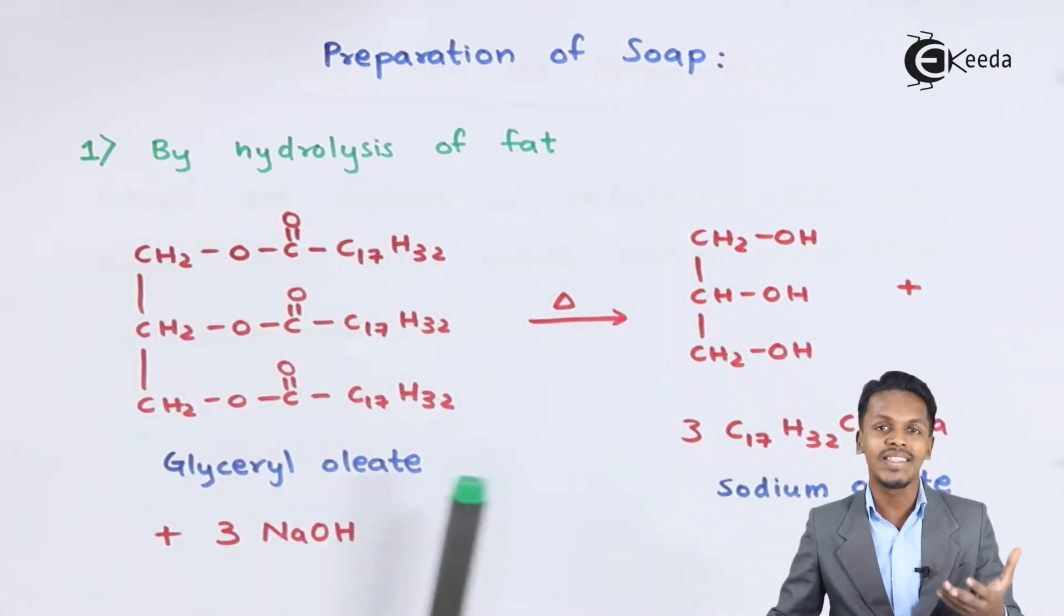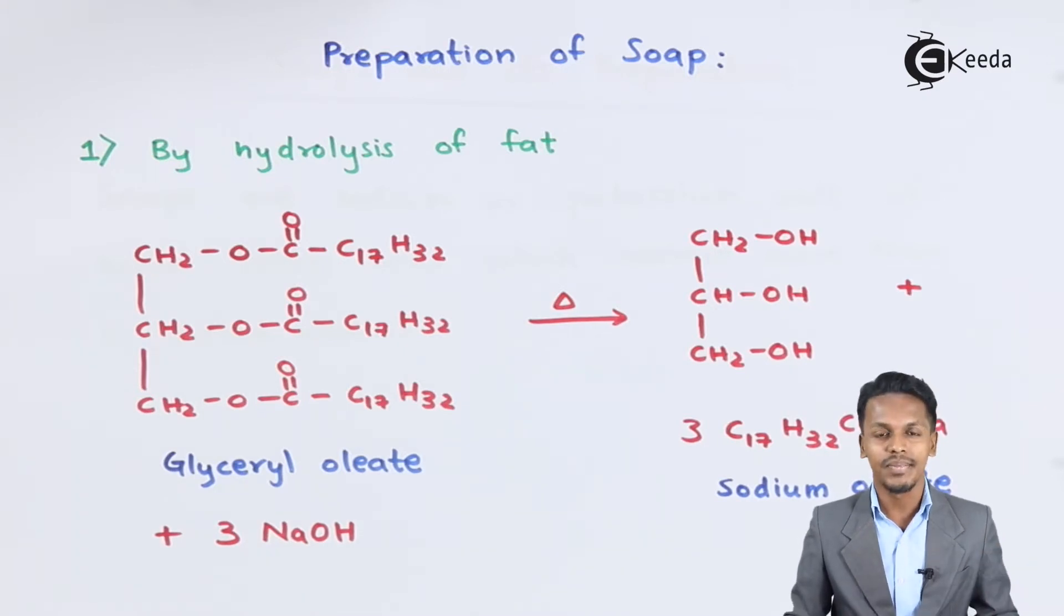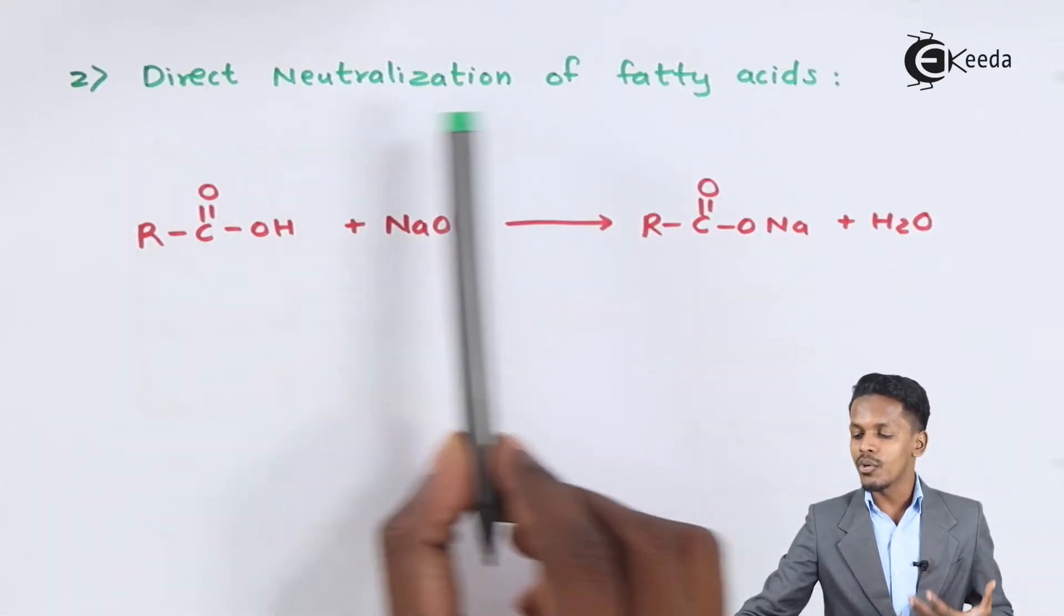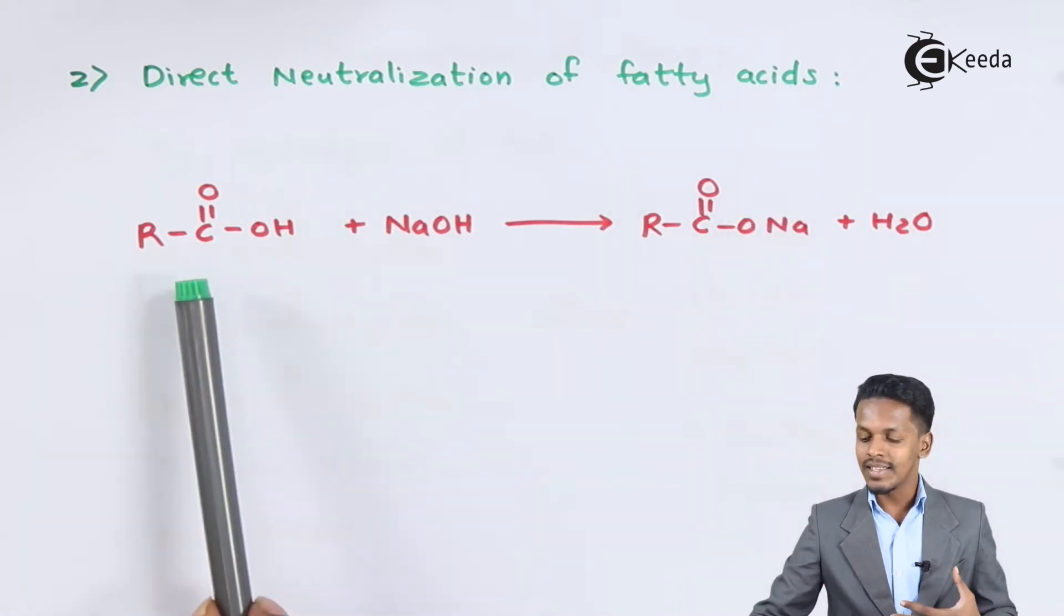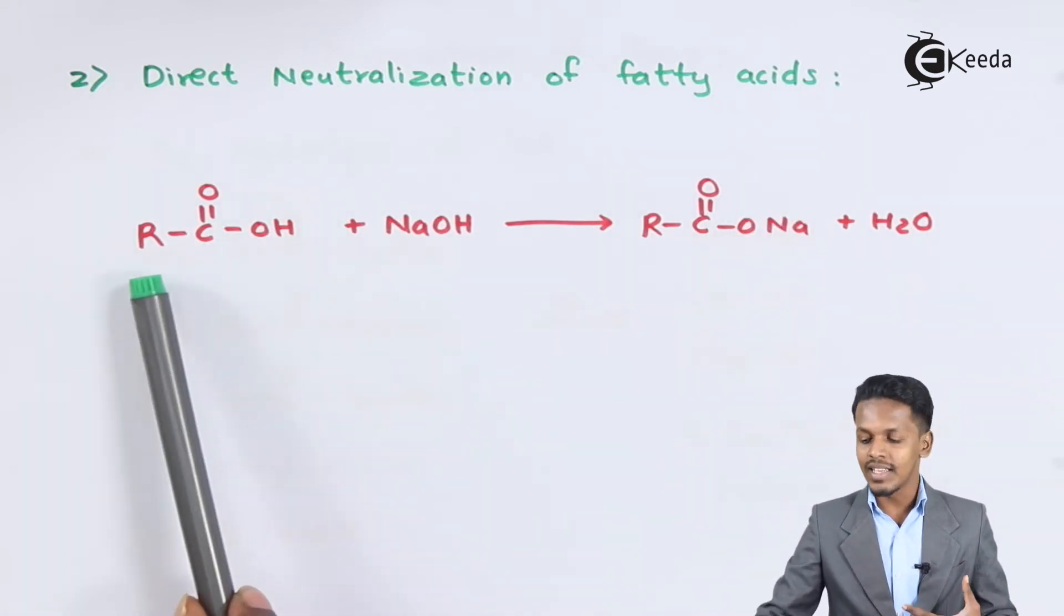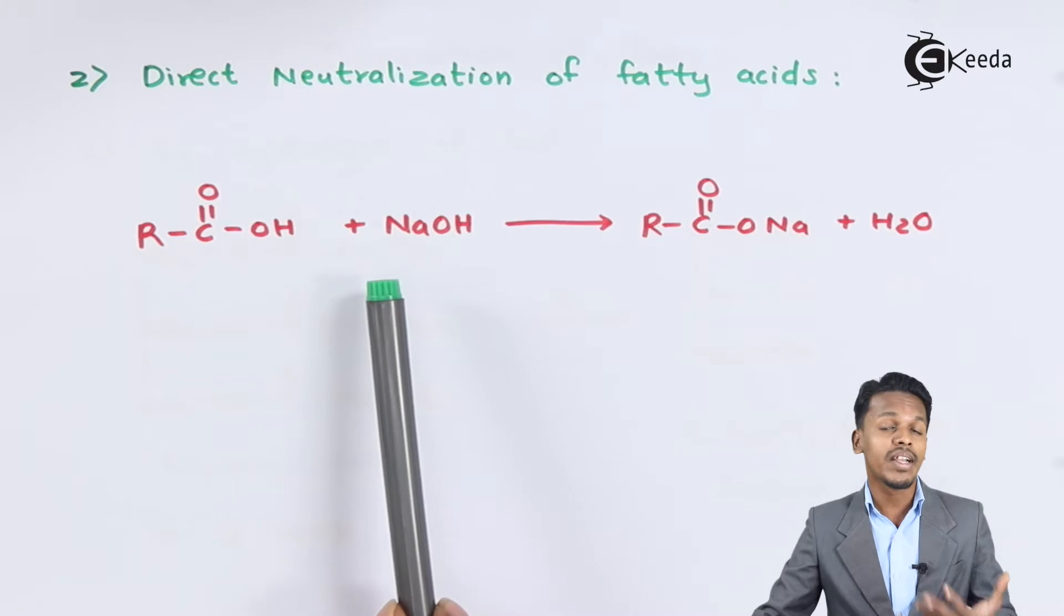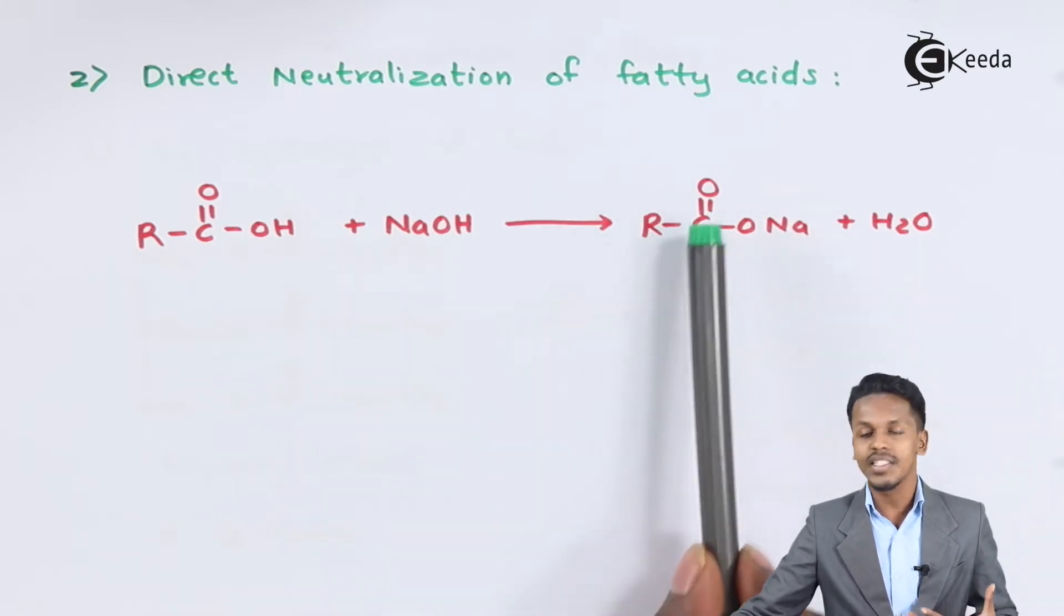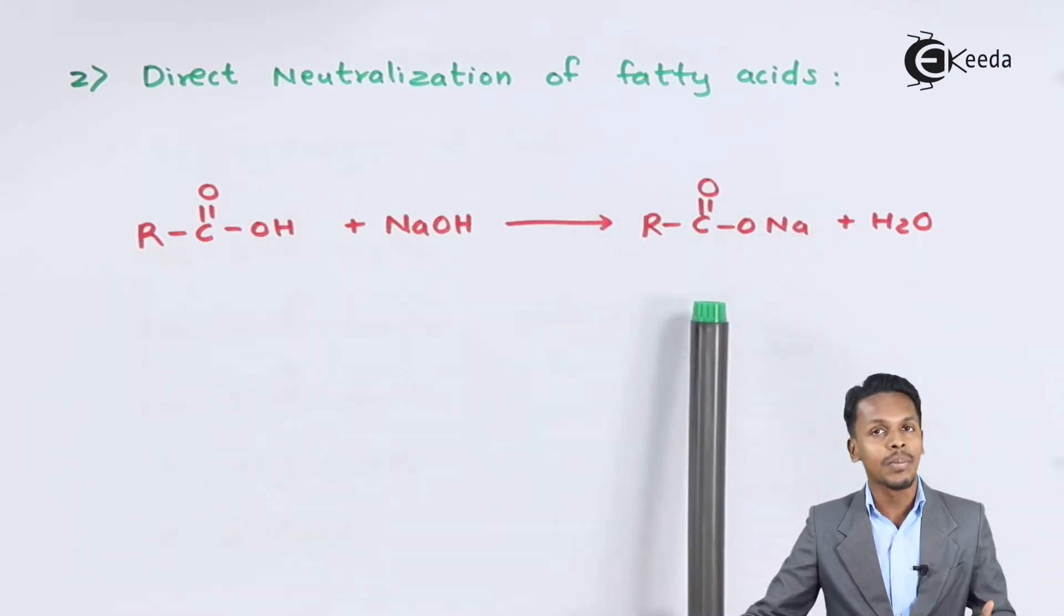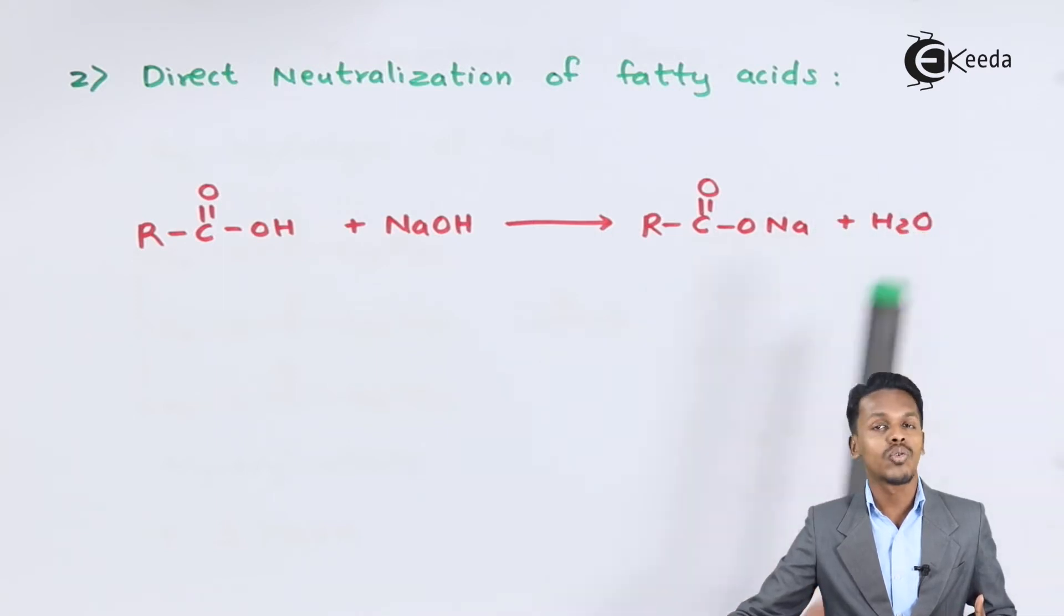The second method is direct neutralization of fatty acids. In this case, we have a fatty acid RCOOH, and if we treat it with NaOH, we get RCOO-Na, which is the soap, along with H2O removed as a byproduct.